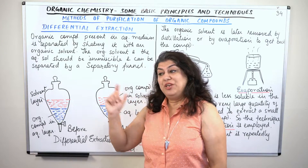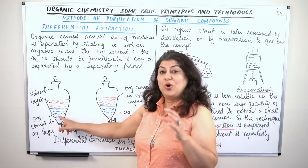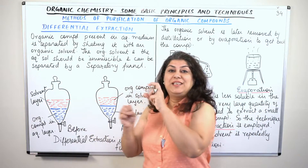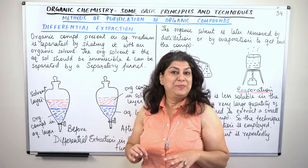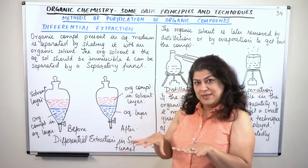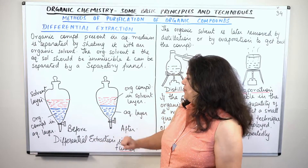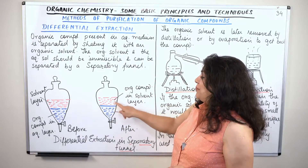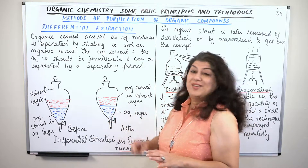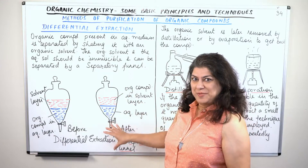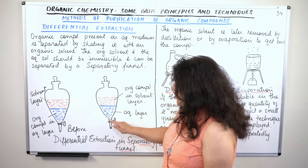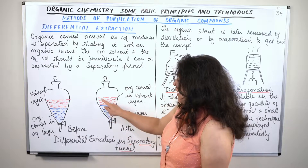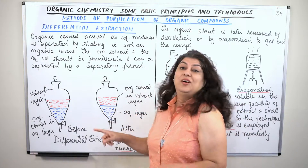When you shook the flask, the organic compound left the water and entered the globules of the organic solvent. After allowing it to settle, the organic layer comes on top, the water goes to the bottom, and the organic compound is now present in the solvent layer — not in the water. Since we are using a separating funnel, we open the knob, let the water pass out very carefully, and we are left with the organic compound in the organic solvent.